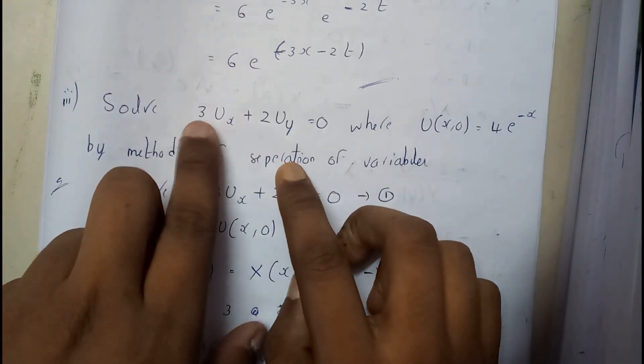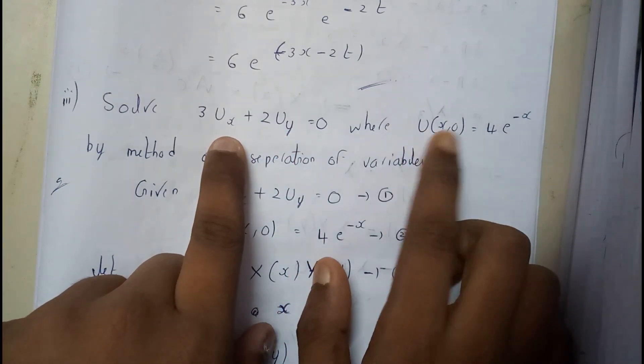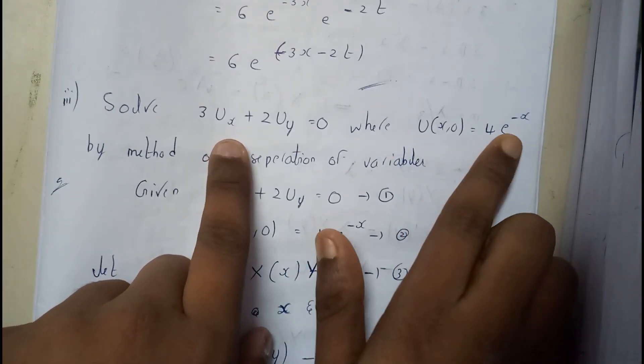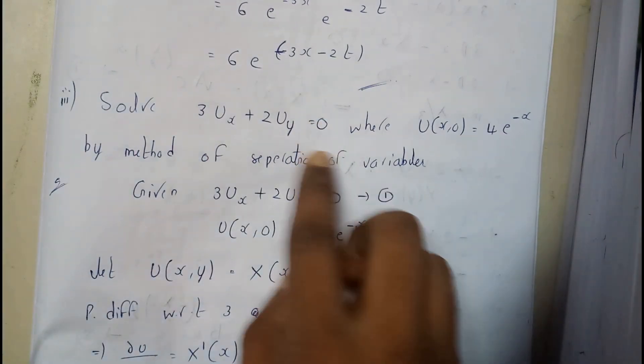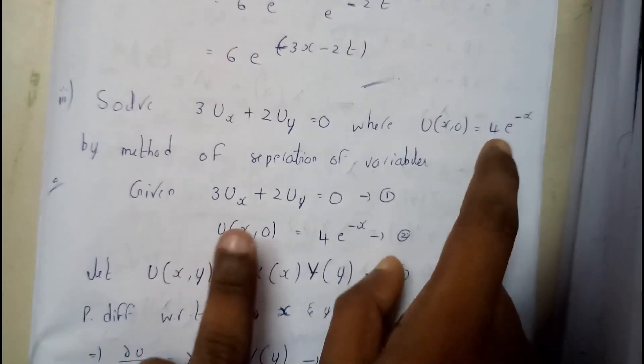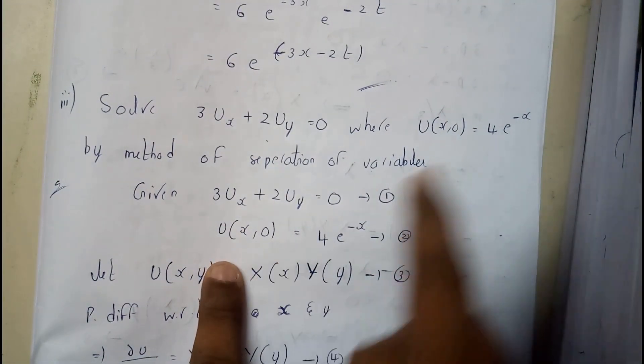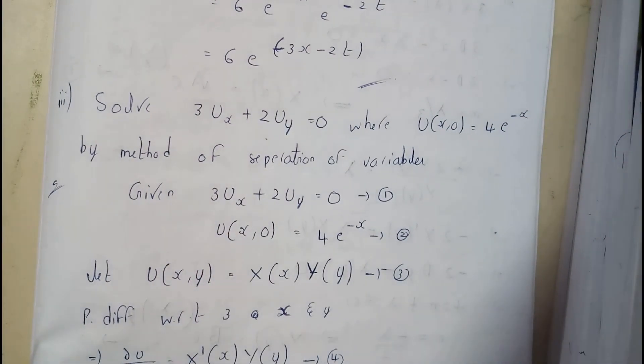The given question is 3u_x plus 2u_y equals 0, where u(x,0) equals 4e^(-x). From this equation we will be solving and continuing, and we will be getting an equation. We will be comparing that result with this and substituting these values to get a solution.